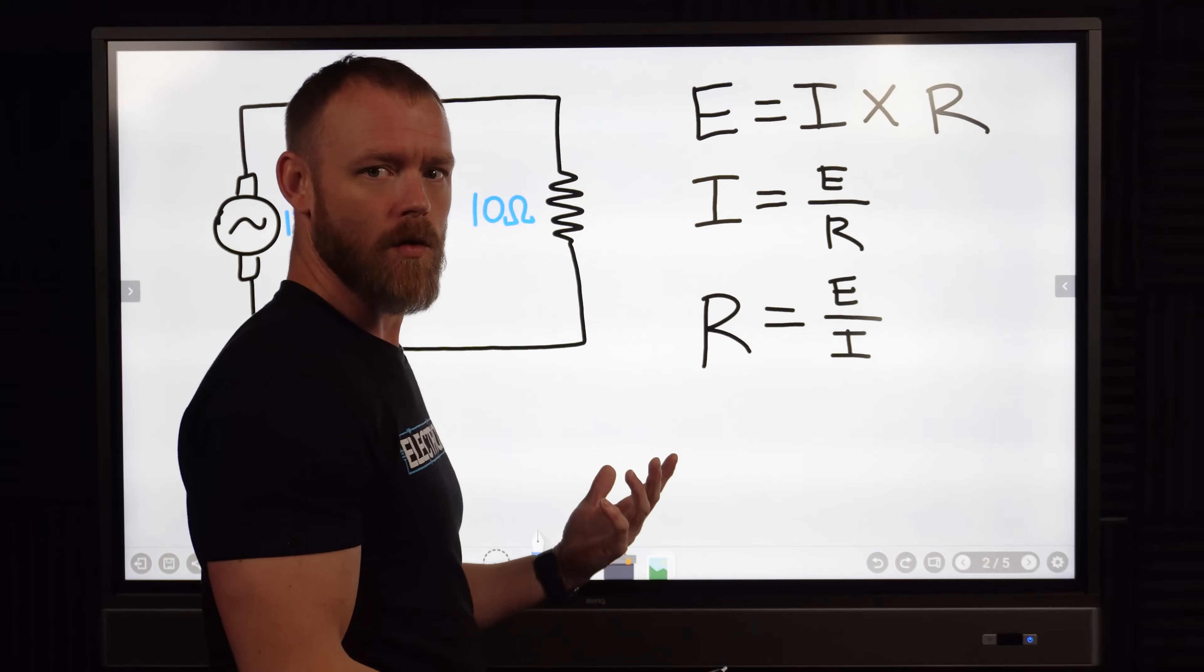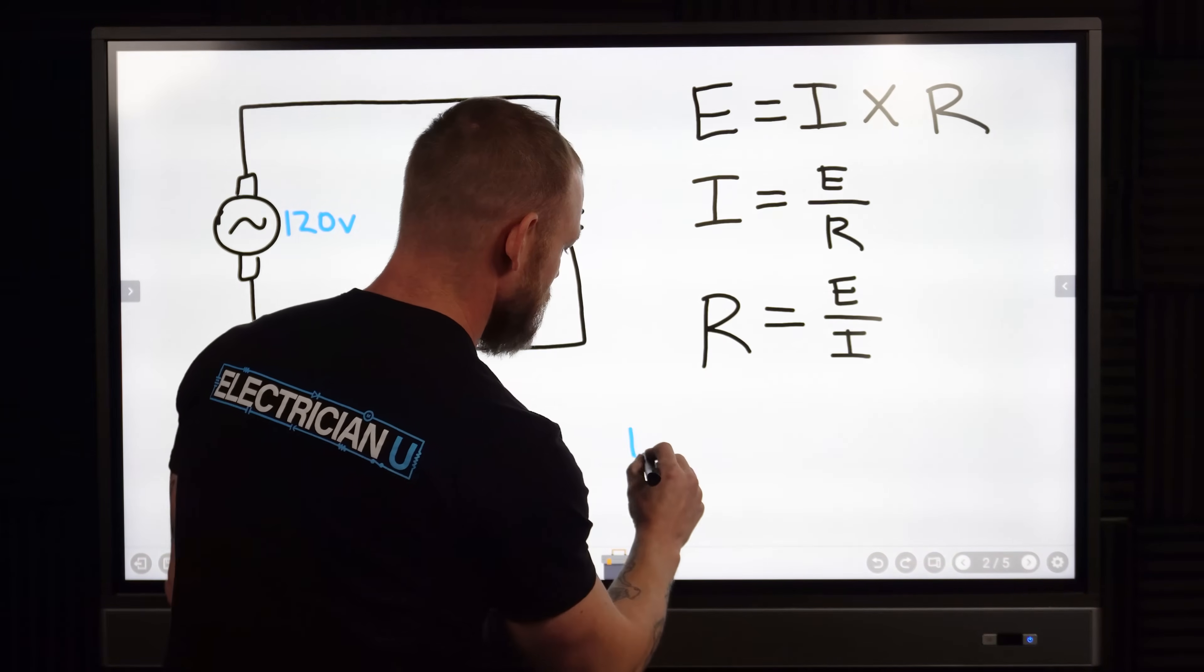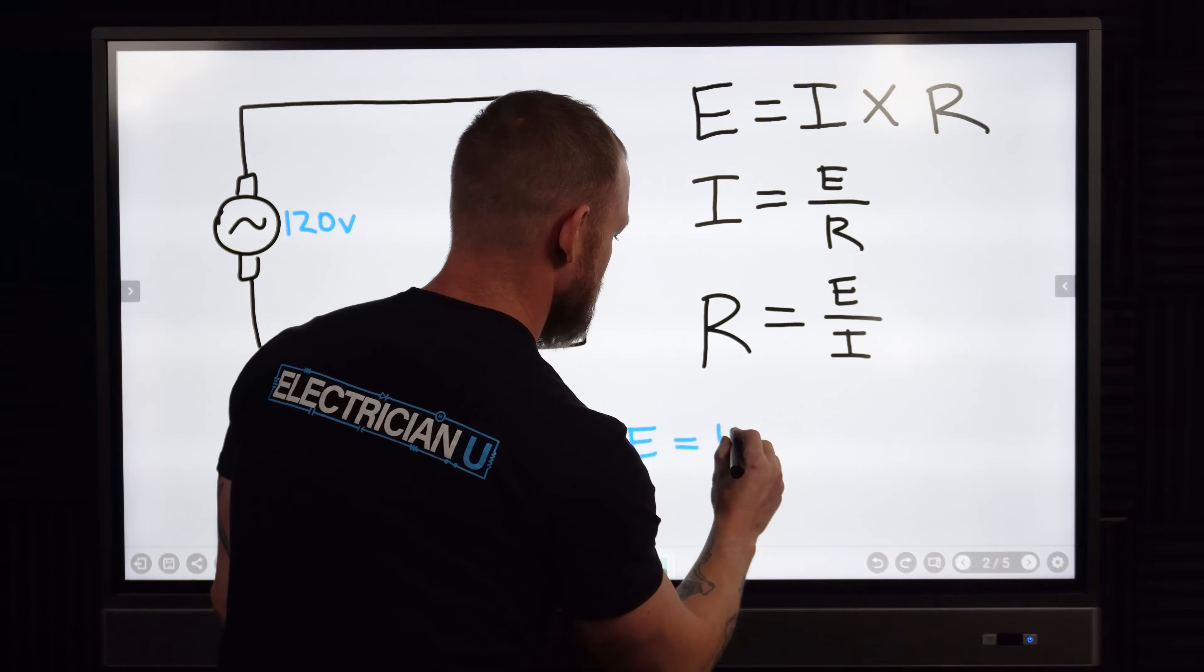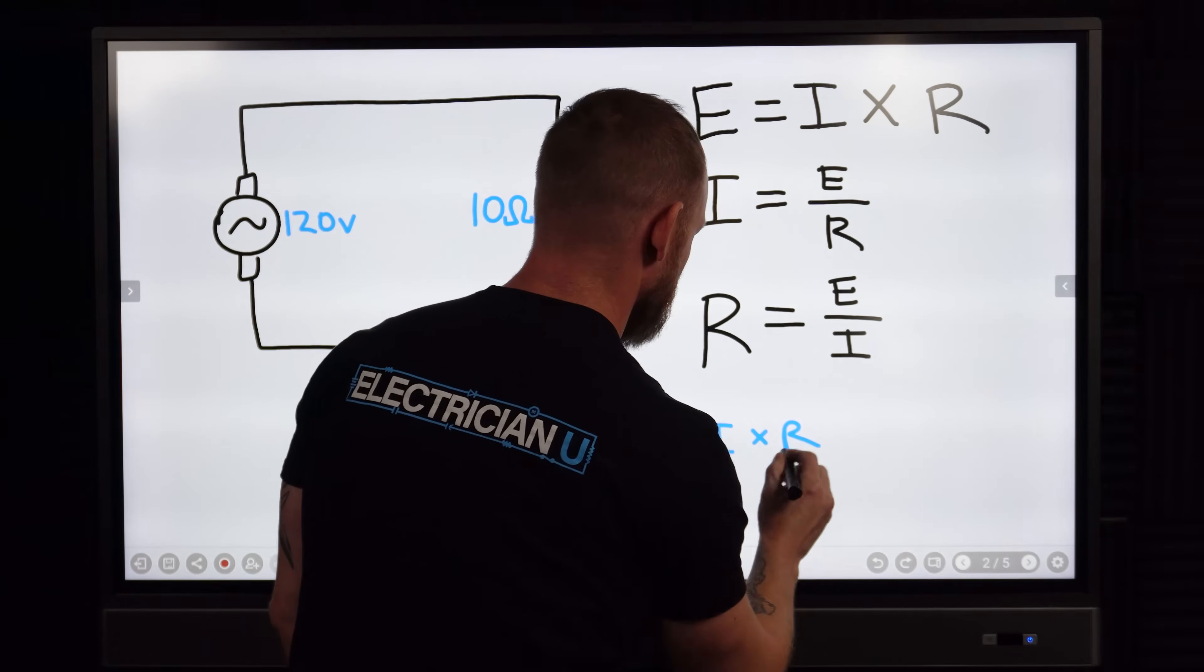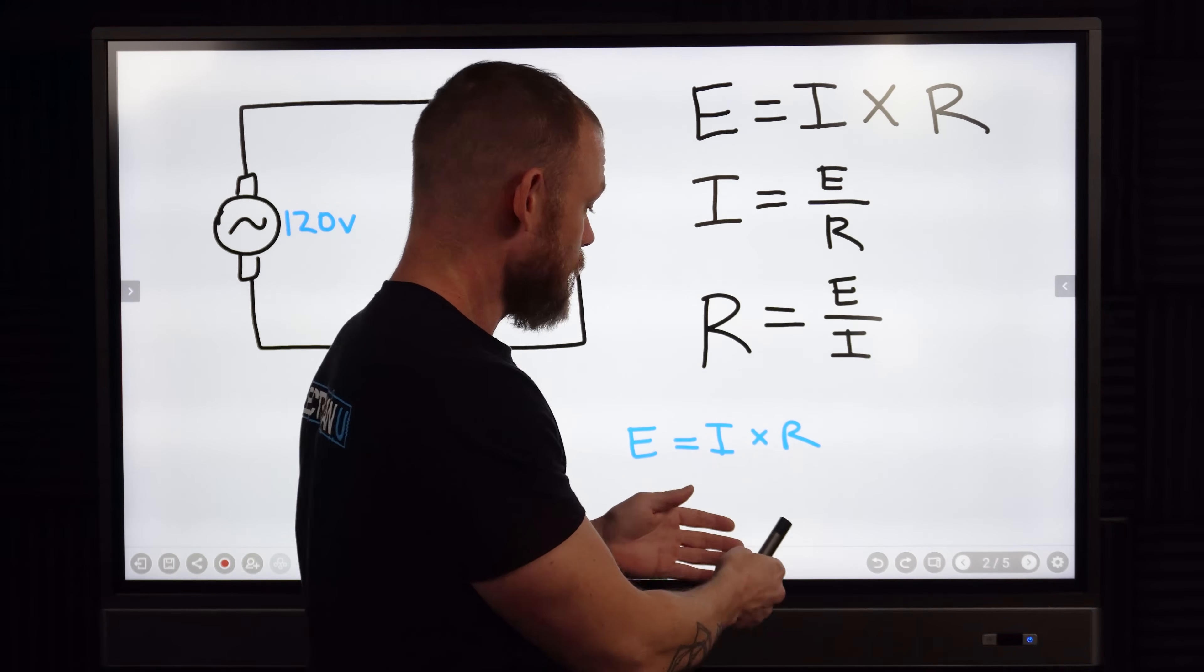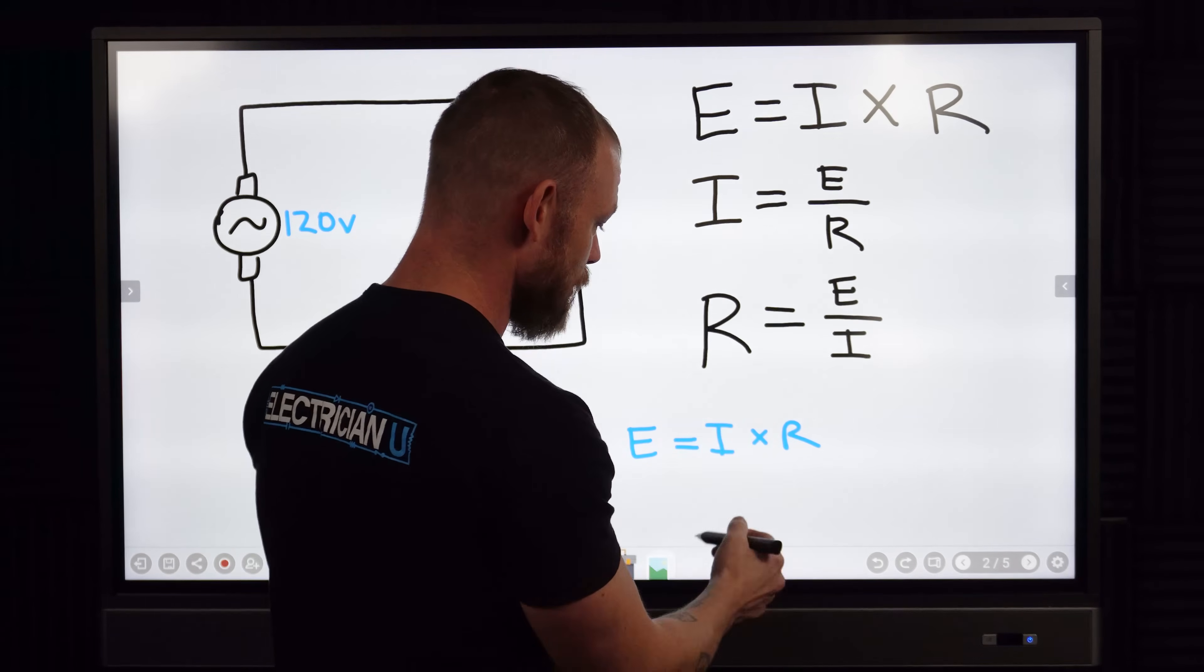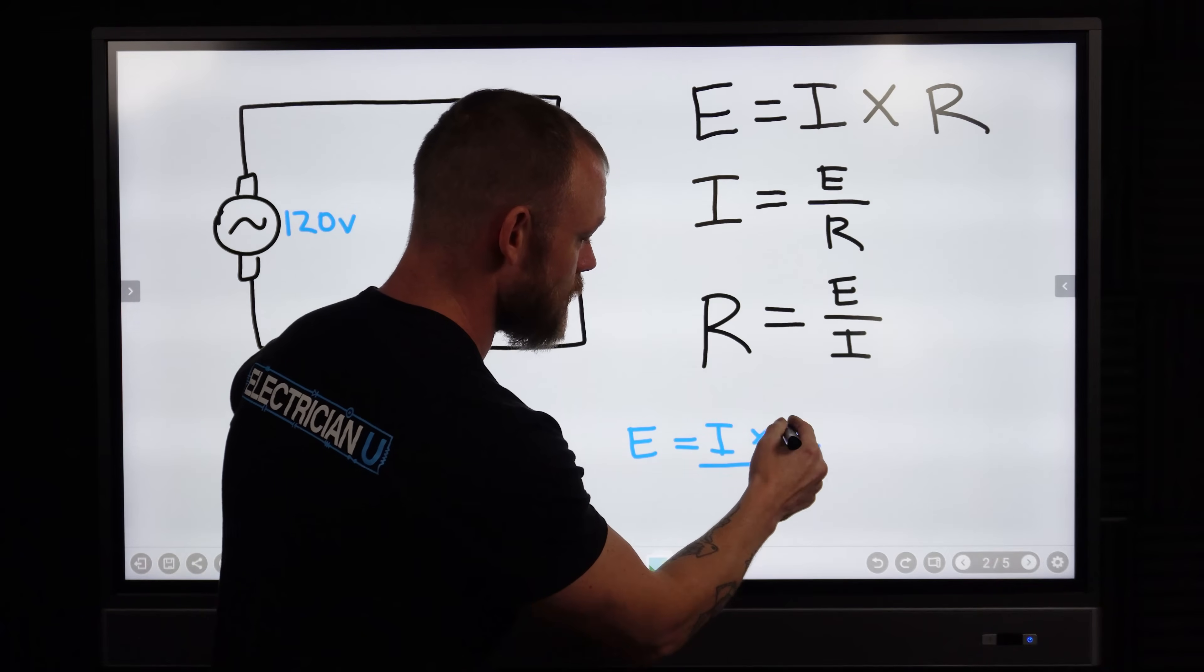If you don't know how to do that, if that kind of blows your mind like how, in basic algebra if we have E equals I times R, well this is solving for E so we need to know E, I and R.